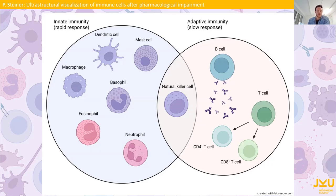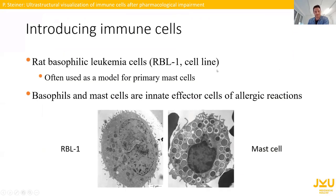Due to the current pandemic situation, kind of everybody is an immunologist nowadays. Very briefly, we have the innate immunity which is unspecific and has a very rapid response, and the adaptive immunity which is specific with a slow response. Today in this talk we are focusing on basophils and mast cells. We're working with a cell line called rat basophilic leukemia cells, or short RBL-1. These cell lines are often used as a model for primary mast cells, but we're also working with primary murine mast cells.